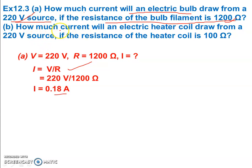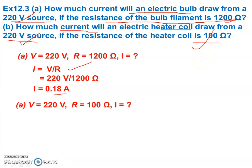In the second part, calculate the electric current through a heater coil. Voltage given is 220 volt, resistance is 100 ohm. Given: V = 220 volt, R = 100 ohm. Find I. Using Ohm's Law: I = V/R = 220/100 = 2.2 ampere.